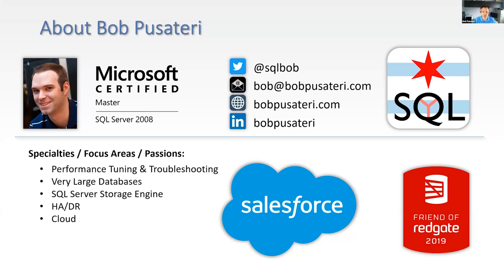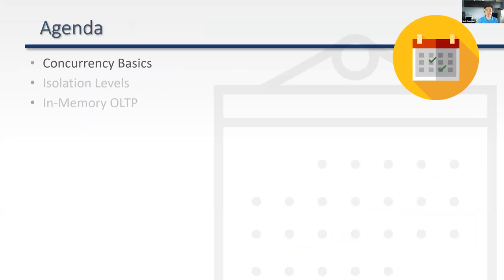We have a lot of material to cover, so I'm going to get right in and get started. We'll start off by talking about the basics of what concurrency is and why it matters. Then we'll dive into SQL Server's isolation levels — how they work, what they do, and why they matter for performance and correctness. At the very end, we'll briefly touch on in-memory OLTP.